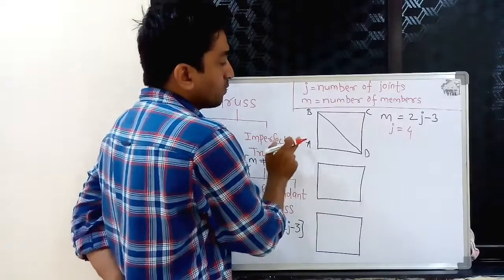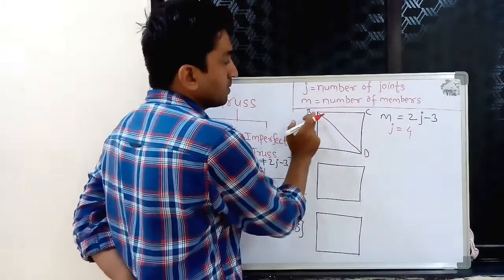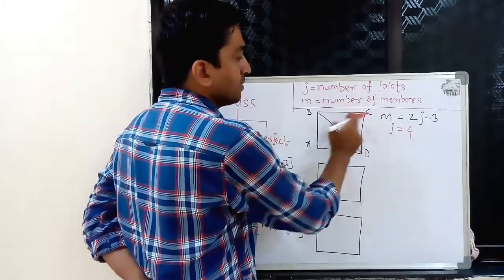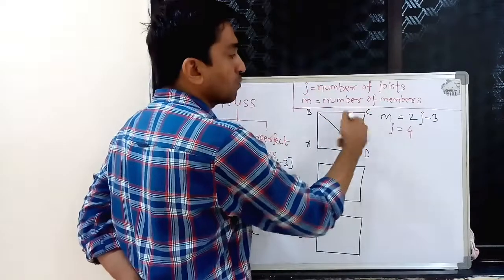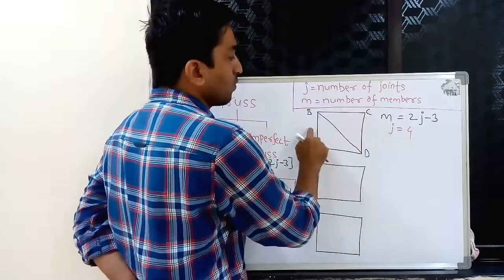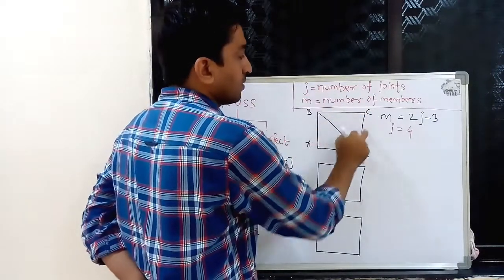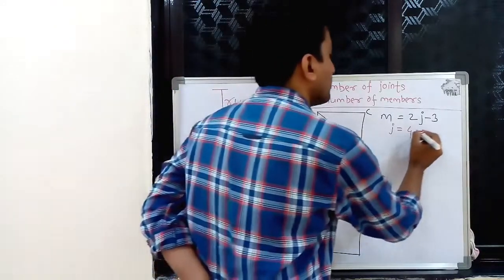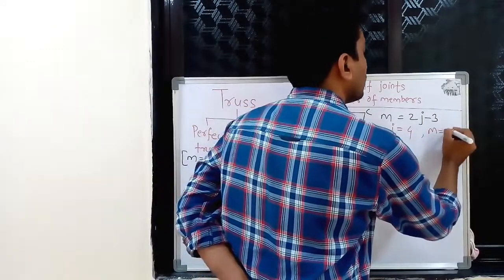Let us count. A to B is one member, B to C is the second member. Counting in this way: first, second, third, fourth, fifth. So the total number of members is equal to 5.